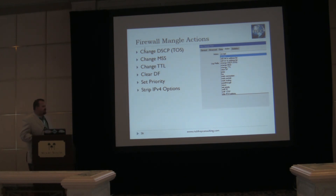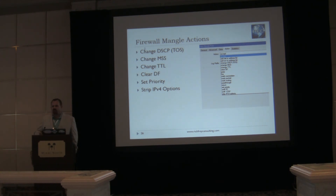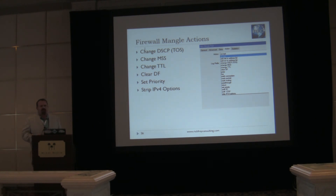The priority field in Mangle actually applies to Layer 2 priority. We can also strip all of the IPv4 options — we can't choose which options or the manner in which they're stripped, we just strip all of them. So for most situations, I'd say 99% of the time, it's not particularly useful, but it is one way that we can affect packets.